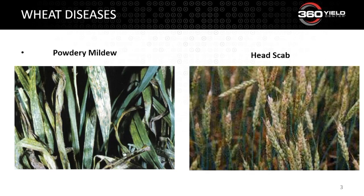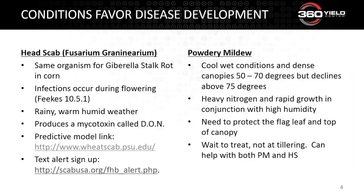Starting off with a couple of fairly common diseases here in the Midwest and even out west as well — that's powdery mildew and head scab. We've had really good conditions for the development of both of those diseases. Head scab is caused by the same organism that causes pink stalk rot in corn — it's gibberella. The disease is referred to as Fusarium graminearum, but gibberella stalk rot is very common, and that's the same organism.